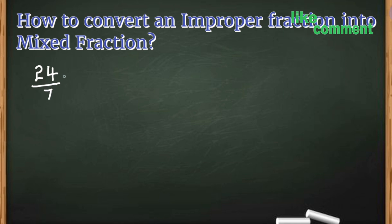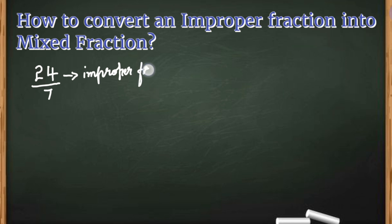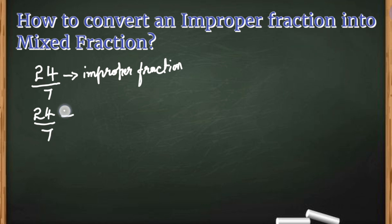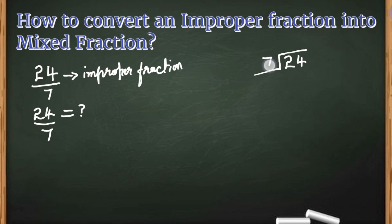Let us take another example and do the same thing: converting an improper fraction into a mixed fraction. I have taken the example 24 by 7. This is an improper fraction because the numerator is greater than the denominator. To convert this, we have to divide the numerator by the denominator.